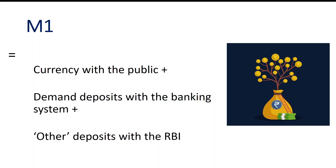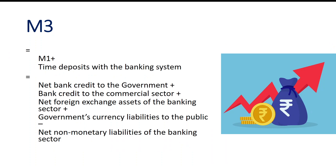M1 includes currency with the public plus demand deposits of the banking system plus other deposits. In M3 we are adding time deposits or fixed deposits with the banking system. M3 also equals net bank credit to the government plus bank credit to the commercial sector plus net foreign exchange assets of the banking sector plus government currency liabilities to the public minus net non-monetary liabilities of the banking sector.